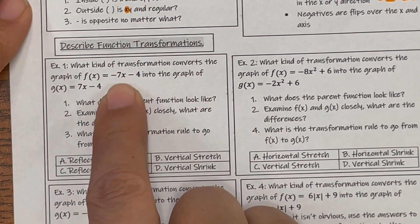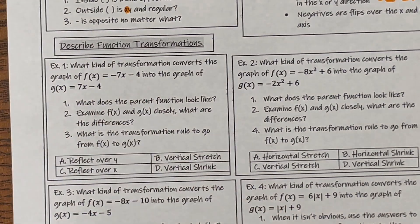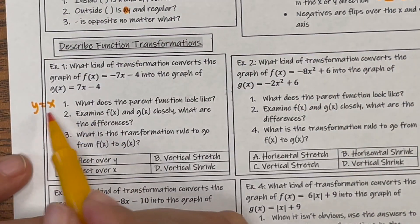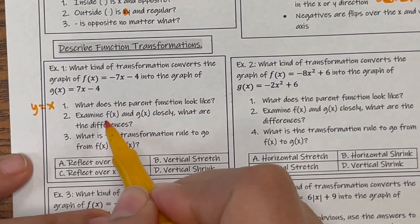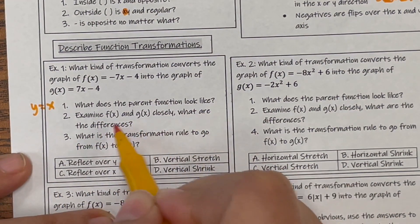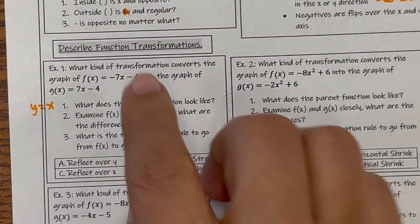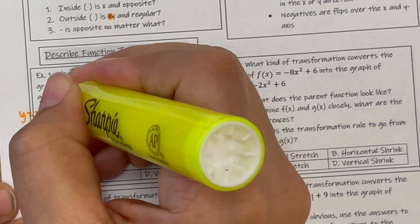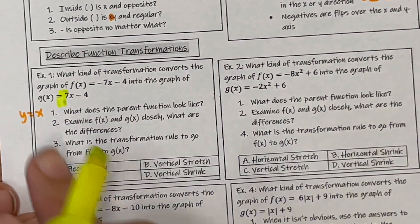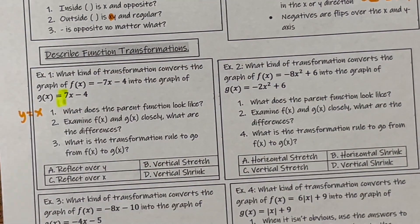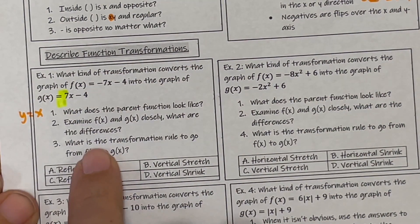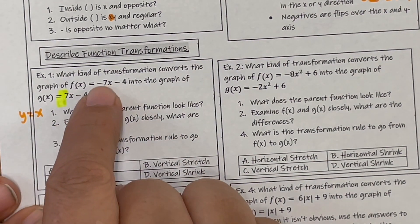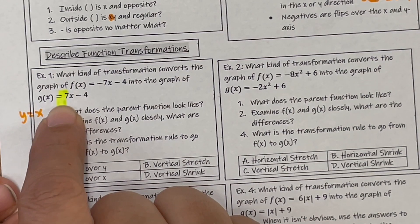What does the parent graph look like? It's linear — this is the graph that looks like Y equals X. Examine F of X and G of X closely. What are the differences? Looking very closely, the only difference I see is that G of X does not have a negative. So you have to ask yourself: what transformation rule changes this from a negative to a positive?